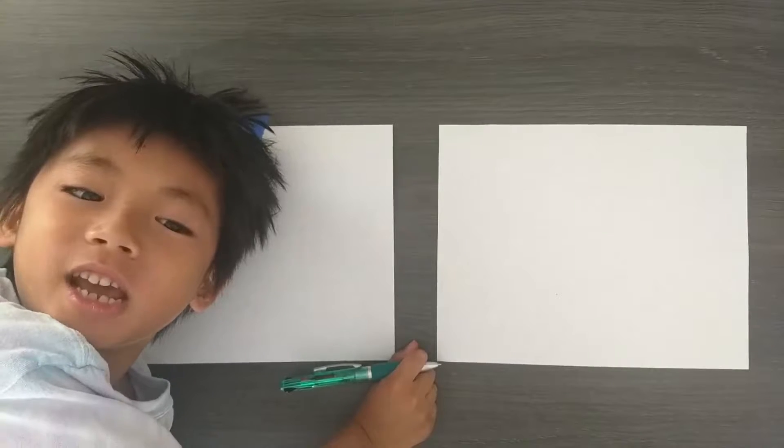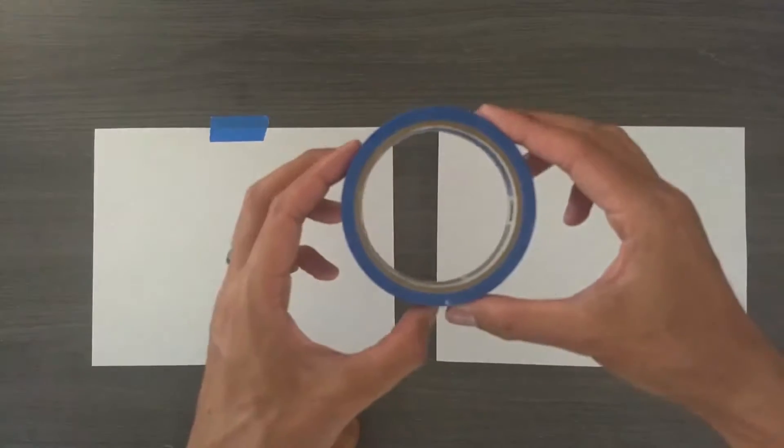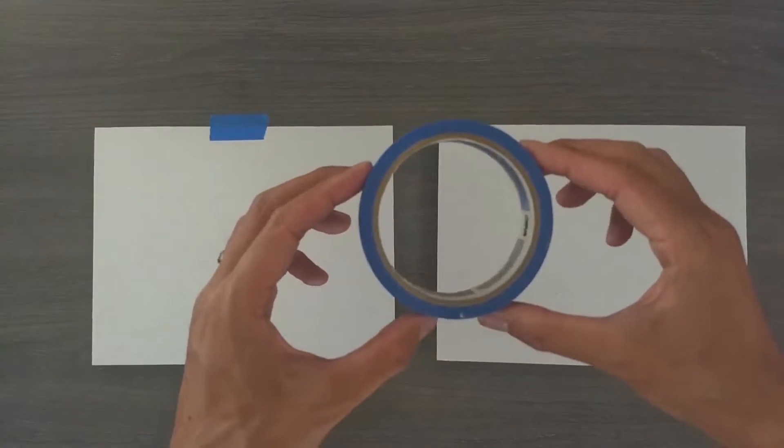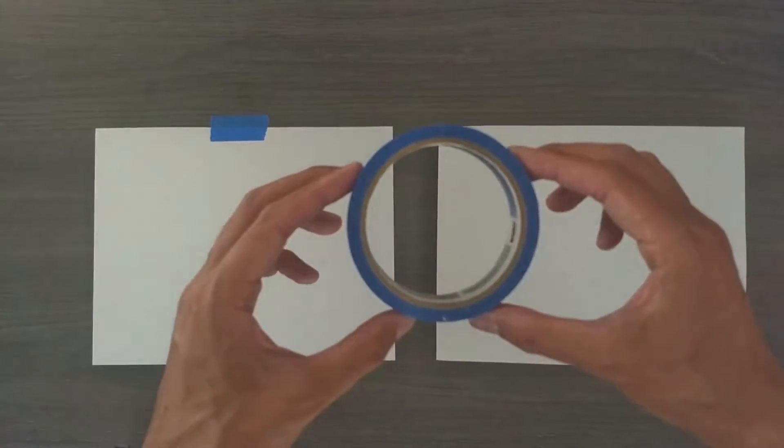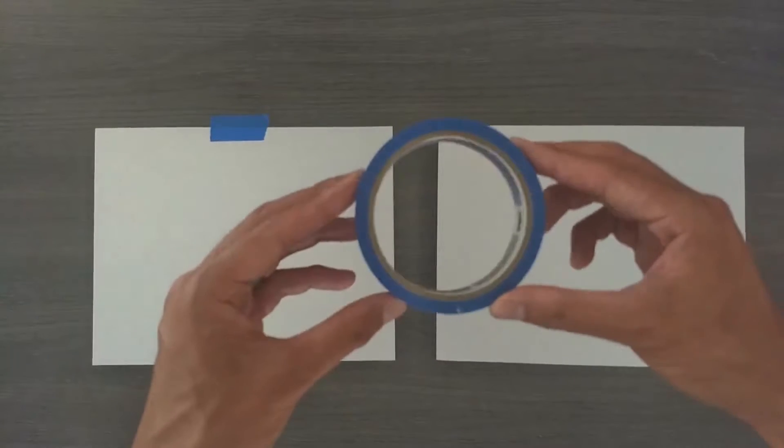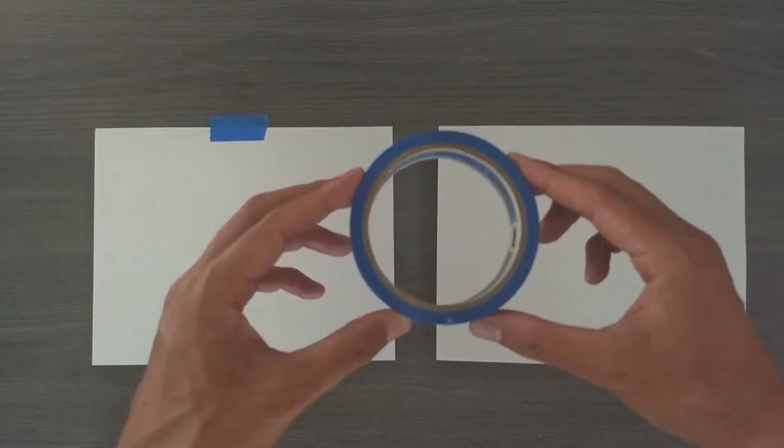Welcome back Sketch Buddies. Today we're drawing an ellipse. So an ellipse is basically an oval. Let's pretend that this tape that we see here is a tire, or a wheel from a car.